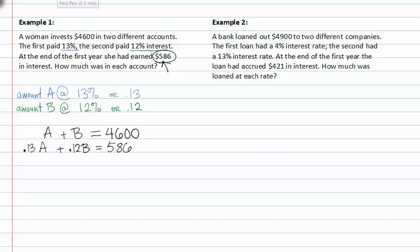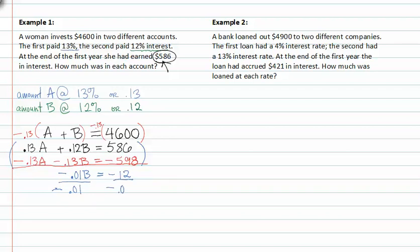Now we need to isolate one of the variables. If I multiply by negative 0.13 to both sides of my equation, I will then get negative 0.13a minus 0.13b is equal to negative $598. If I add these two equations to each other, my a's add to zero. My b terms are now negative 0.01b is equal to negative 12. If I divide both sides of my equation by negative 0.01, I get b is equal to $1,200.